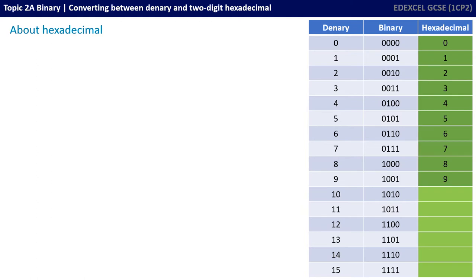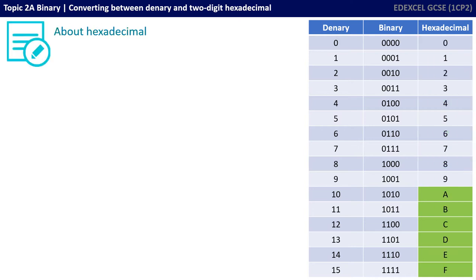Just for convenience, we use the letters of the alphabet. So A is 10, B is 11, C is 12, D is 13, E is 14, and F is 15. And remember that 16 would be 1, 0.